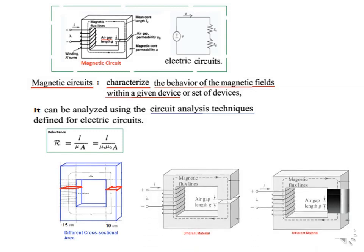If we have two different materials — for example, this whole section is one material and this gap is air — those are two different materials with two different mu-r values. Since mu-r has two different values, we will have two reluctances: R1 for the metal and R2 for the air gap. Similarly, if one portion is made of one metal and another portion of a different metal, we again have two reluctances because their mu-r values differ. Depending on the shape and design, we must first determine how many reluctances R are present.